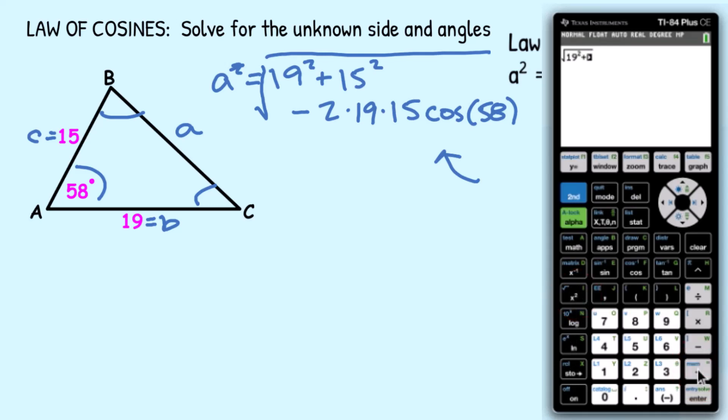Minus 2 times 19 times 15. It's a long formula, but man, it is worth it. Times the cosine of 58 degrees, and this is going to give me side A. Let's keep one decimal place. So side A is 16.85. Let's go ahead and call that 16.9. So I've got side A is 16.9.